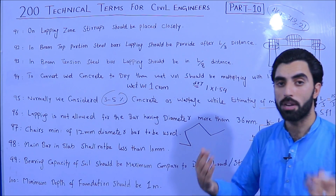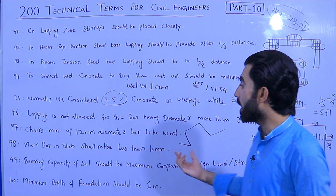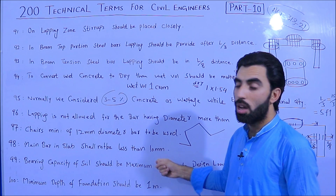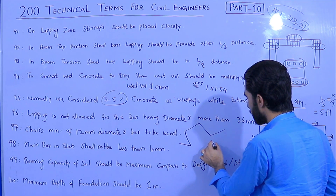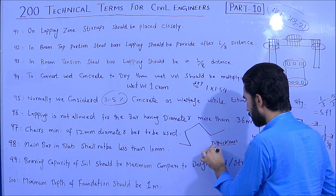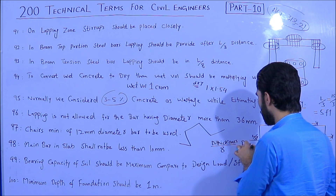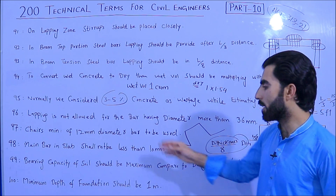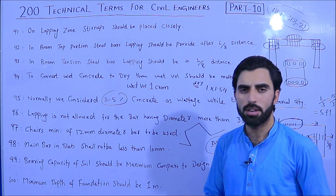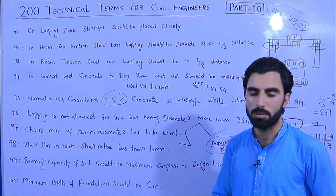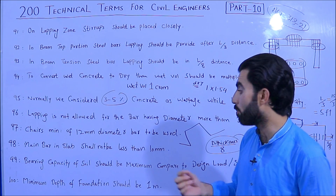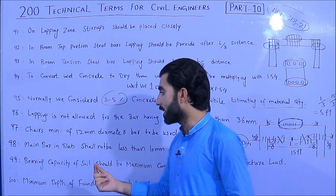Term 98: In an RCC slab, the main bar diameter shall not be less than 10 millimeters. The distribution bar diameter should be calculated as slab thickness divided by 8. For beams (plinth or top beam), a minimum of 12 mm is recommended, but for RCC slabs the minimum main bar is 10 mm.